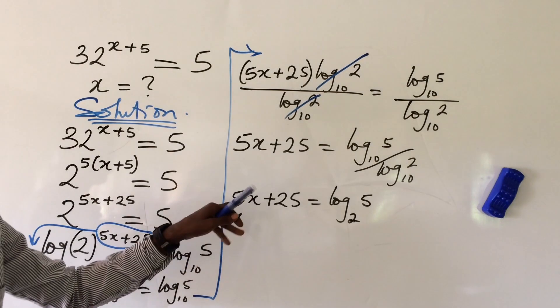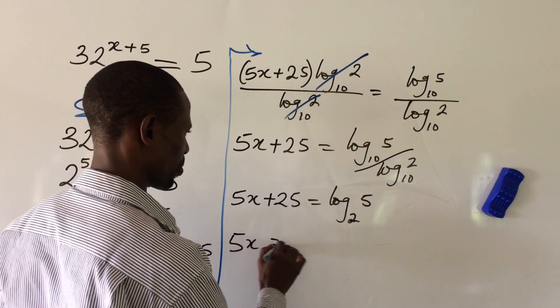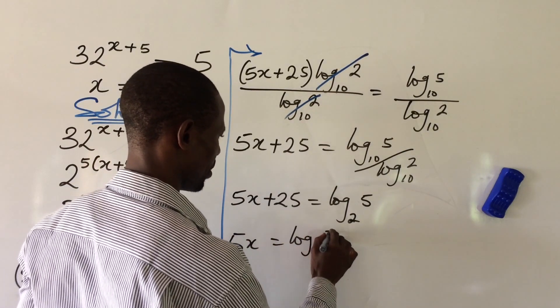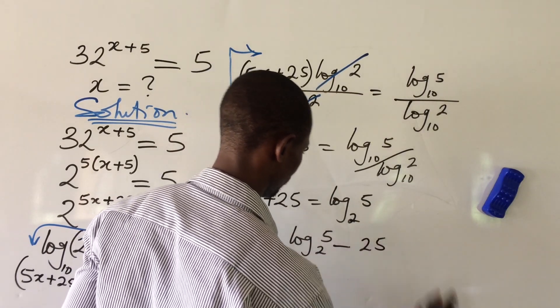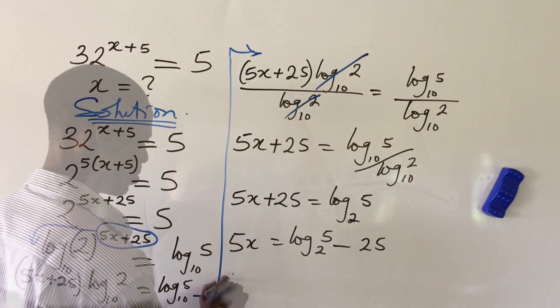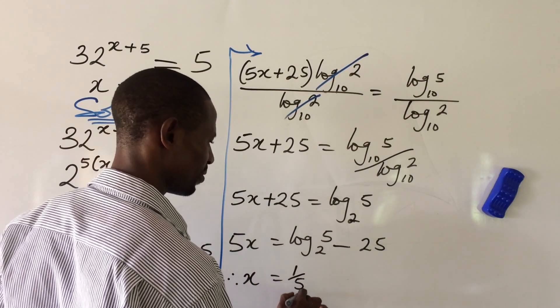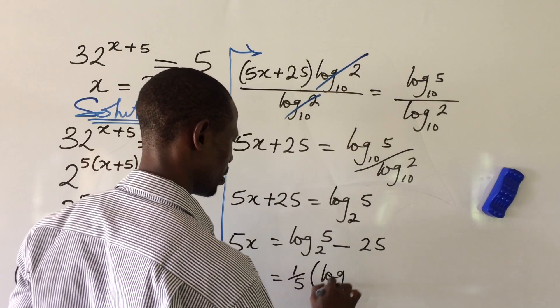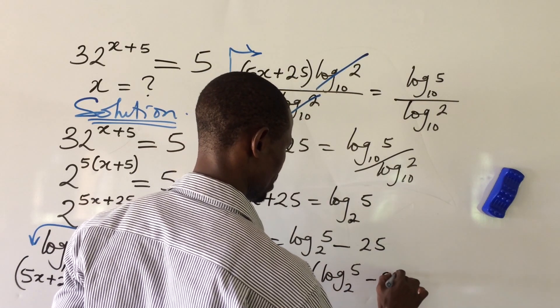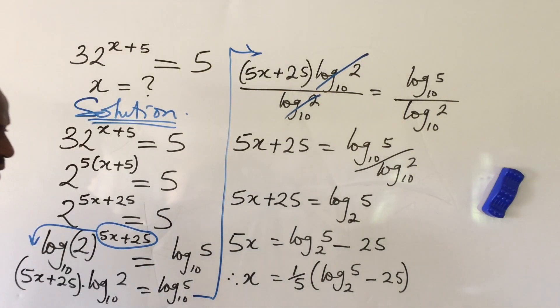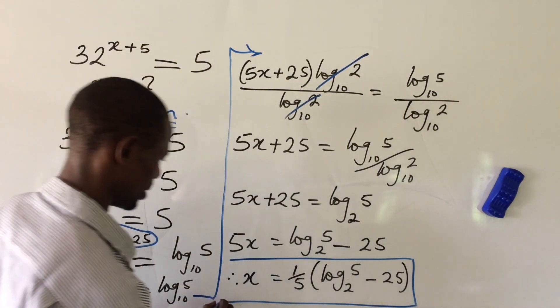We are looking for x. So send this 25 to this other side. So this will give us your 5x equal to log 5 base 2 minus 25. Simple. We're going to have here x is equal to 1 over 5 bracket log 5 base 2 minus 25. Close bracket.